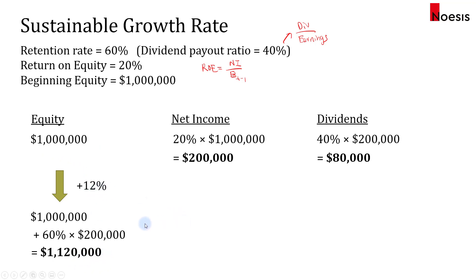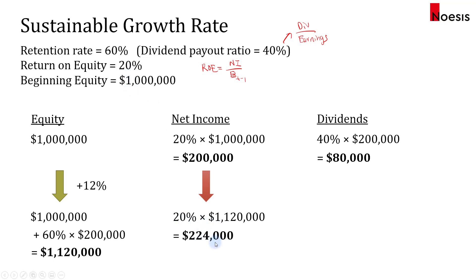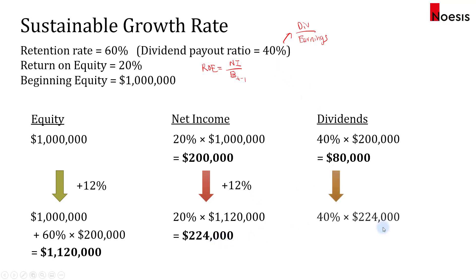For the next year, we take equity of $1.12 million multiplied by the 20% ROE, which gives $224,000. From $200,000 to $224,000, that is again a 12% growth. For dividends, the company continues to pay out 40%, so 40% times income equals $89,600.